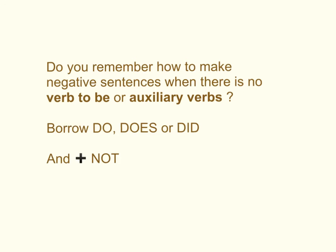So, do you remember how to make negative sentences when there is no verb to be or auxiliary verbs? 当你没有verb to be，或者是没有auxiliary verbs like has, are, 或者is那些，那你怎样做呢？Yes, we borrow do, does, or did and add NOT after it. 是啦，我们就借do, does, or did然后跟着加个not字在后面，就会将一句句子变成否定式的了。